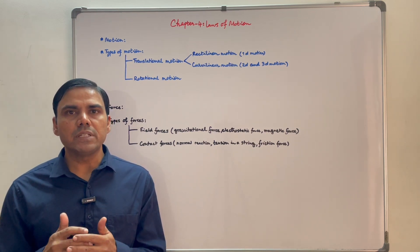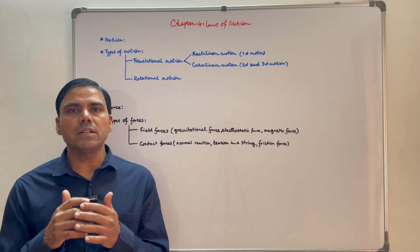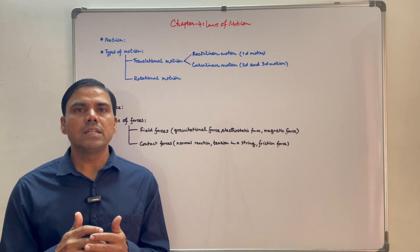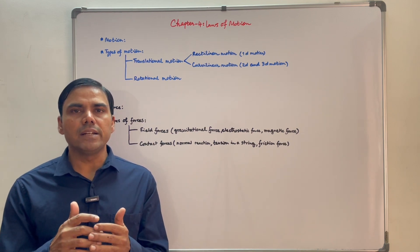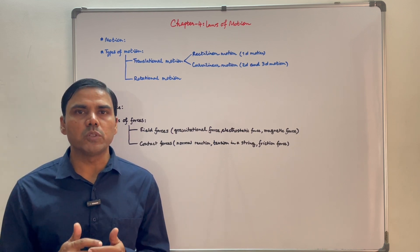Translational motion can be further subdivided into two categories: rectilinear motion and curvilinear motion. We have already read two chapters in kinematics. Motion in a straight line is related to rectilinear motion and motion in a plane is related to curvilinear motion.